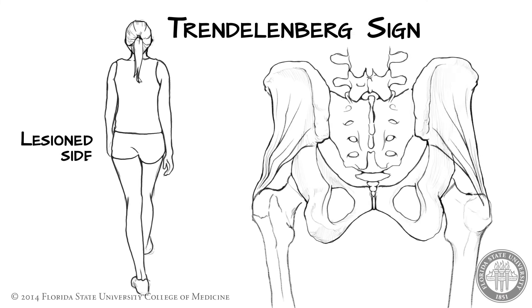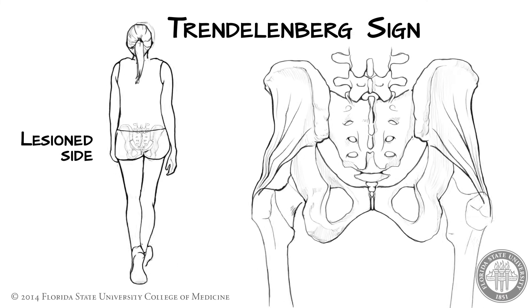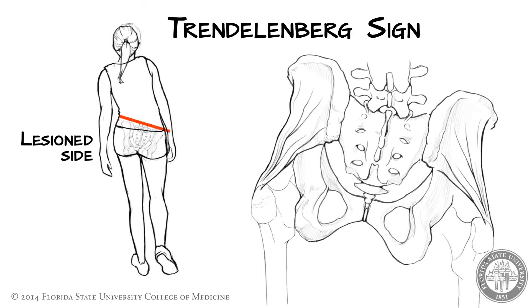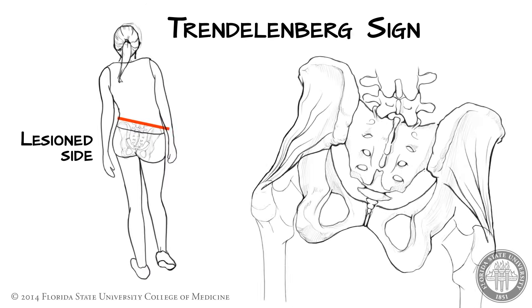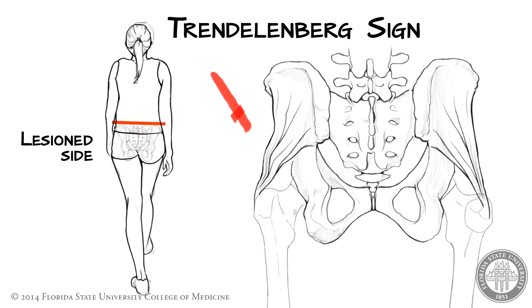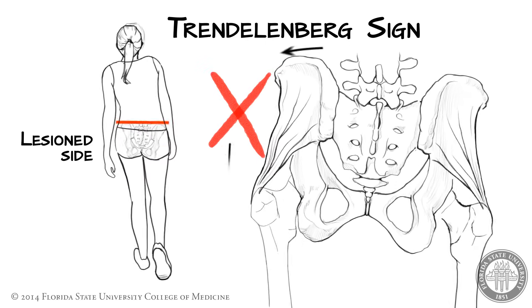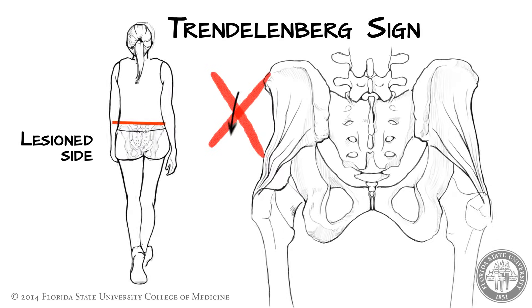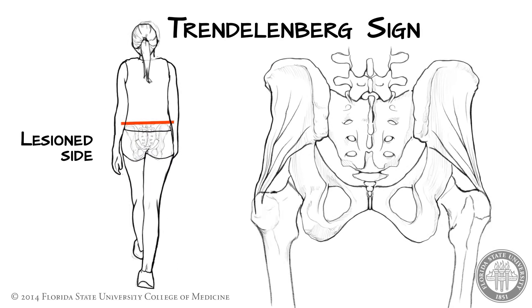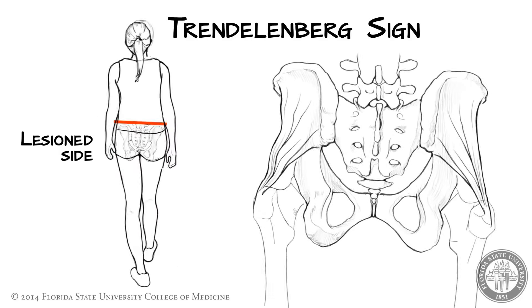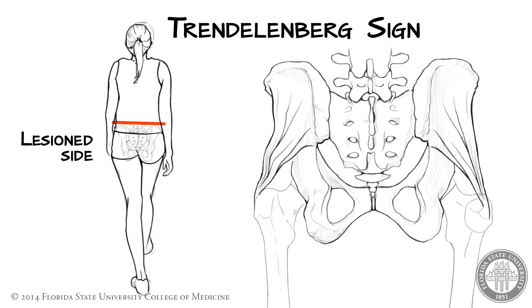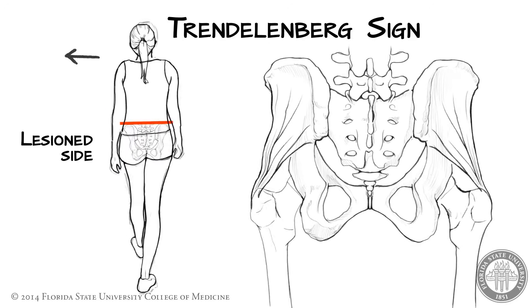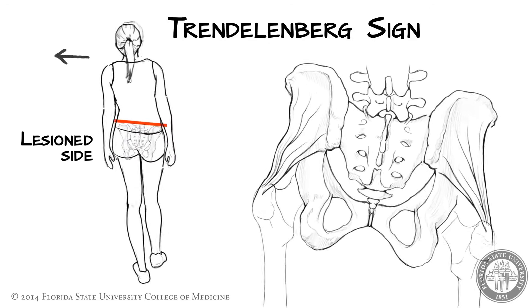Now let's look at the walking gait of someone with paralyzed hip abductors on the left side. When this person's weight is supported by the left leg and the right leg is unsupported as it swings forward, the paralyzed hip abductors on the left side are unable to offset the weight of the right leg. This causes the pelvis to tilt downward, throwing the body's center of gravity off. In order to counteract this imbalance, these persons will often maintain their center of gravity by leaning their torso back to the left each time the right leg is unsupported.